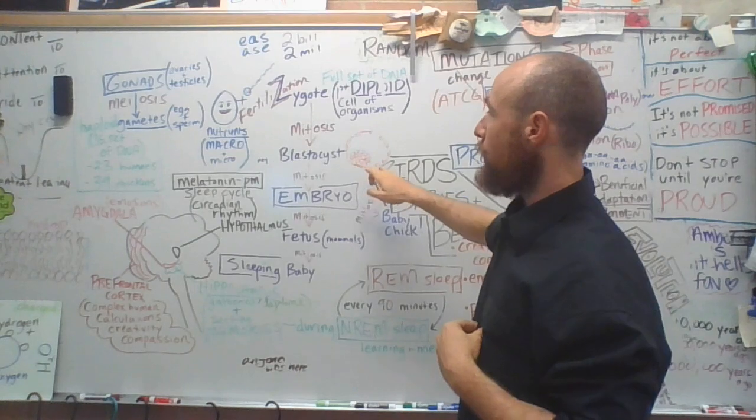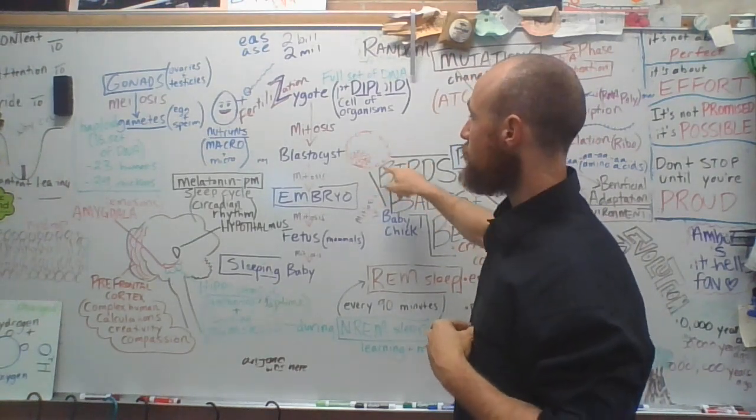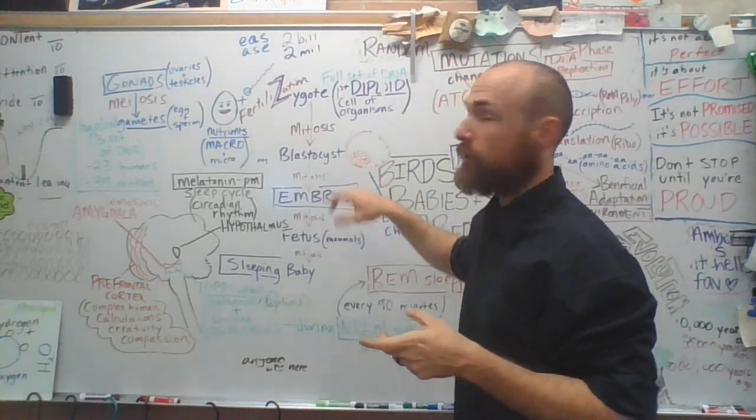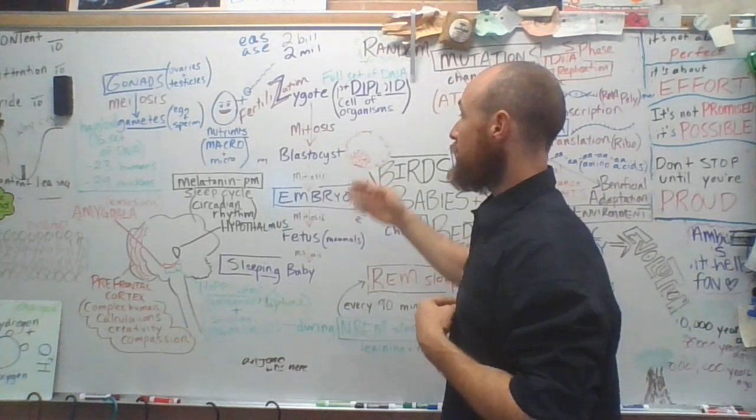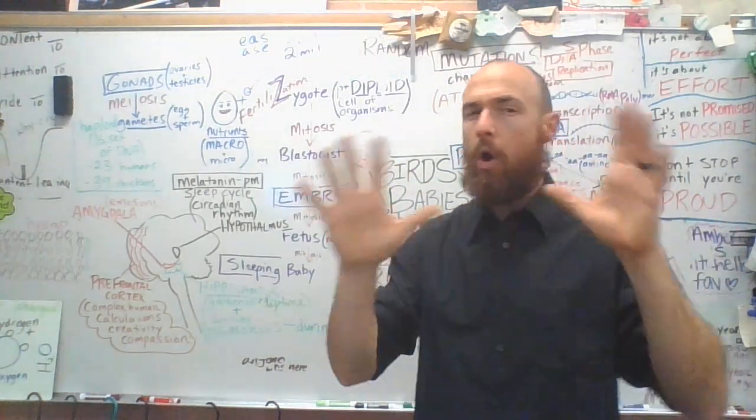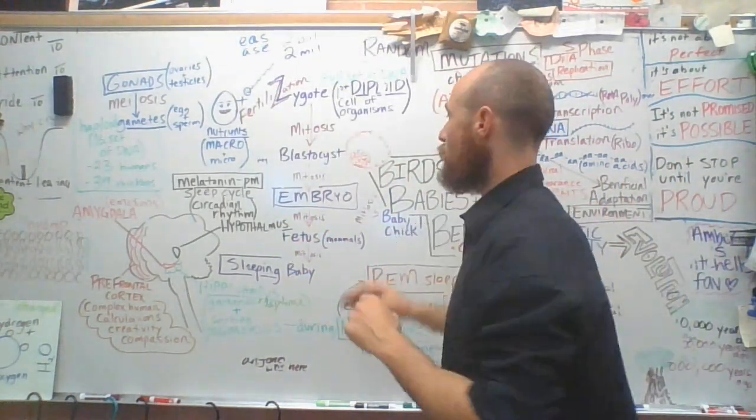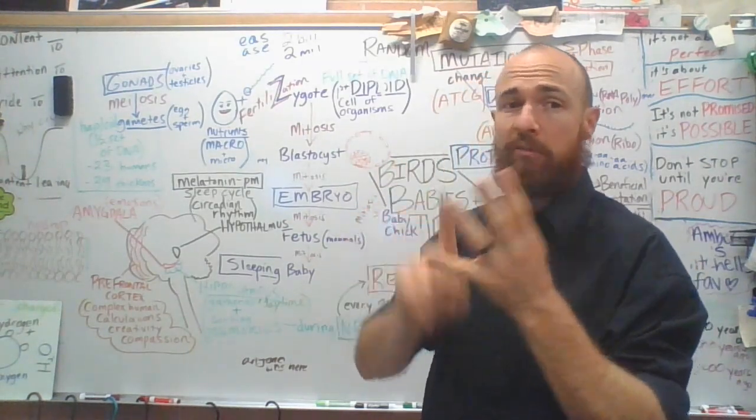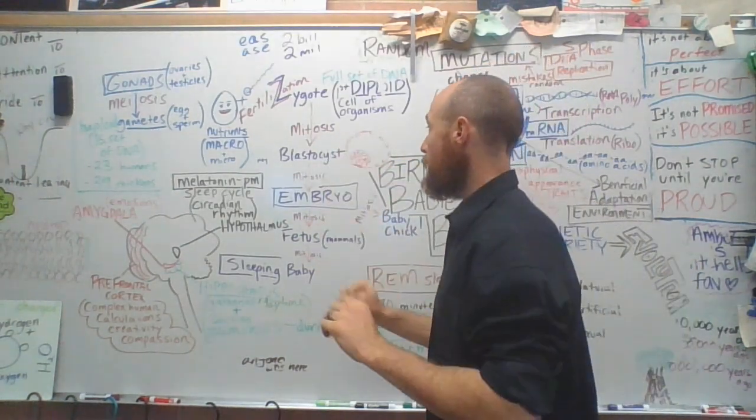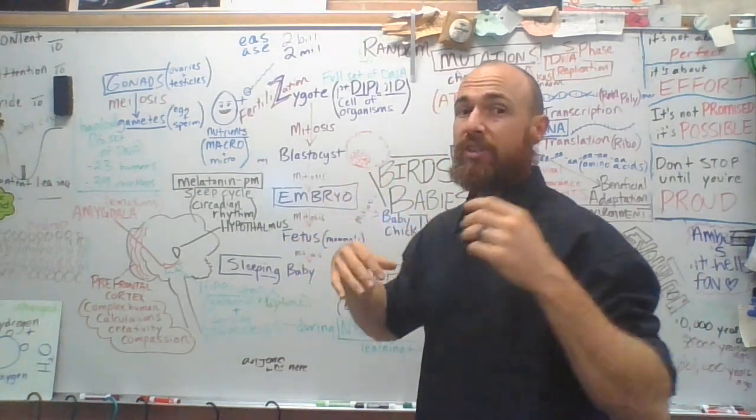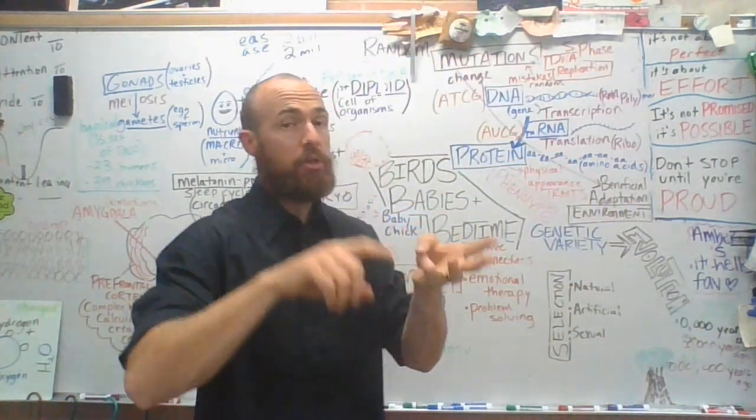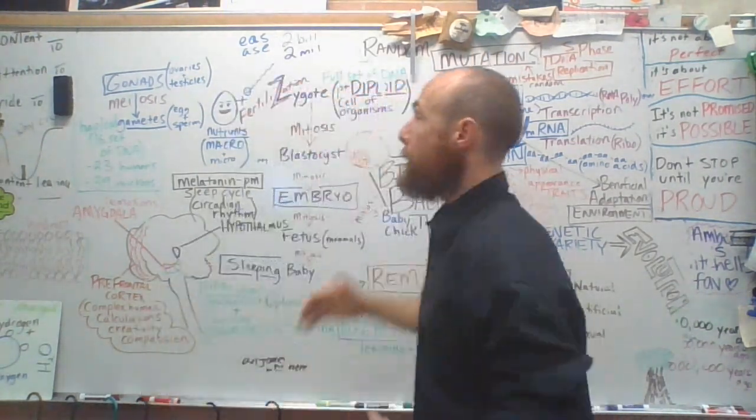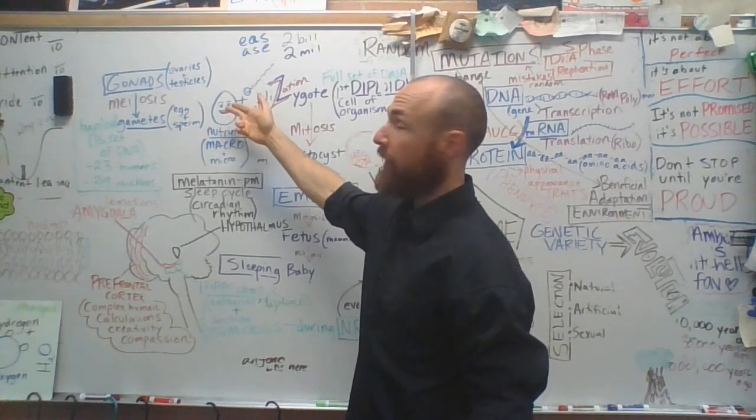The first step is called a blastocyst, where you have these cells around the outside and a cluster in the middle. The outside cells are going to be supporting the inside cells. The inside cells are going to become the actual organism. So these stem cells are totally powerful. They are all powerful stem cells that are going to become every single cell in the chicken. Nervous system, digestive system, skin, feathers, like everything. And what are cells made of? Cells are made of proteins, lipids, carbs, and nucleic acids. And therefore, mama chicken has to put a ton of that into there.